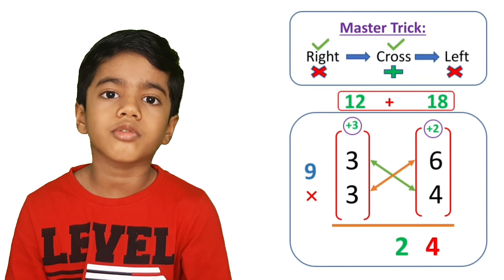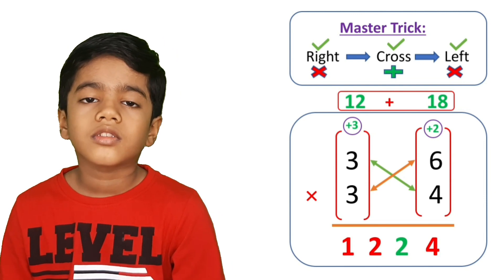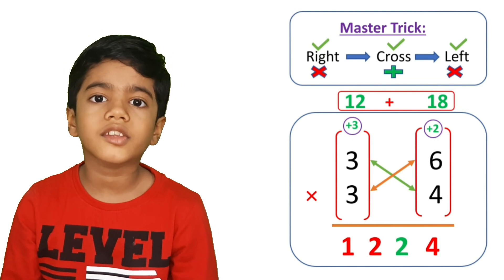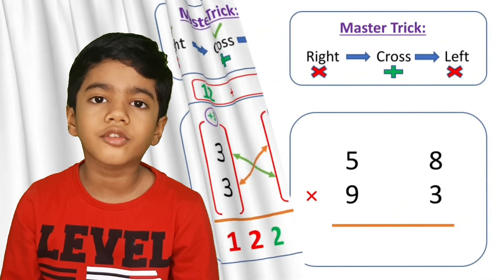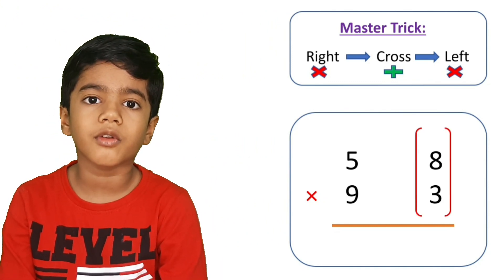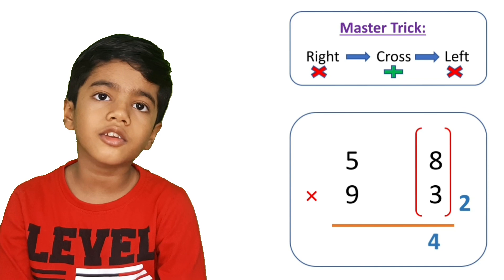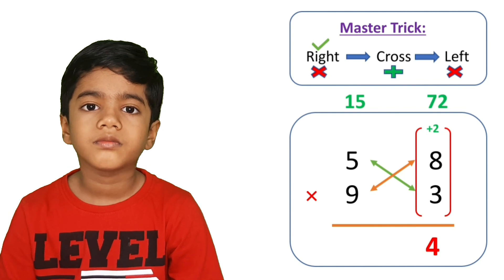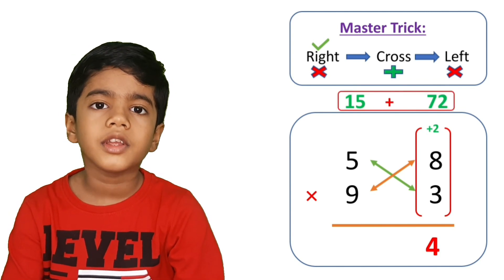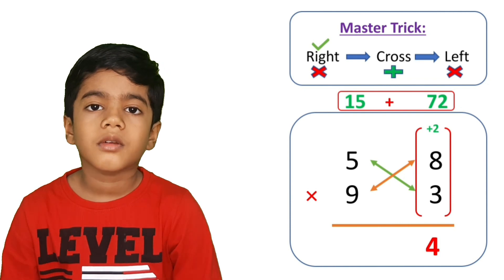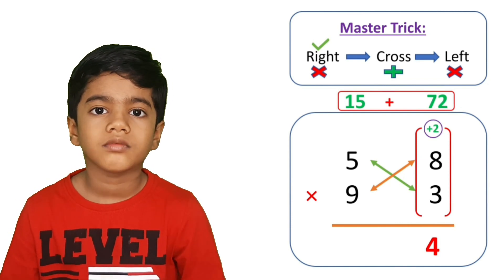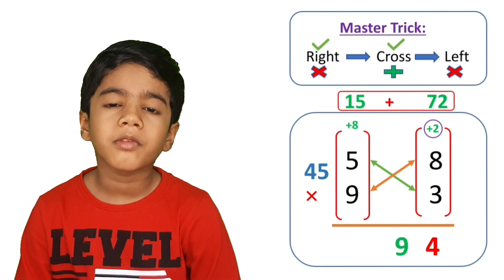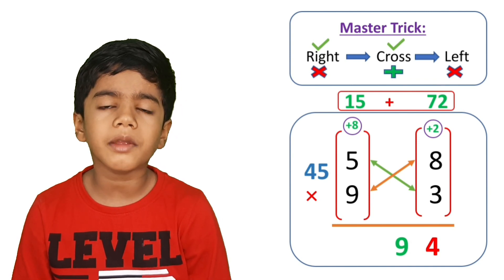Now let's take a bigger number: 58 into 93. Right side: 8 times 3 is 24, so keep 4 here and take 2 carry. Now cross: 5 times 3 is 15, 9 times 8 is 72, so 15 plus 72 equals 87, plus 2 carry gives 89. Keep 9 here, take 8 carry. Now left side: 9 times 5 is 45, plus 8 carry gives 53.